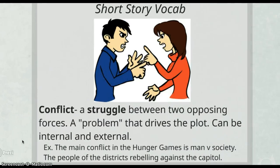Next we have conflict, which is a struggle between two opposing forces — a problem that drives the plot. It can be internal or external. Internal conflict is usually referred to as man versus self, a conflict going on inside someone. A great example is Hamlet, where the character is having an internal struggle with seeing his father's ghost. An example more relevant to you: the main conflict in The Hunger Games is man versus society, an external conflict where the people of the districts rebel against the Capitol.